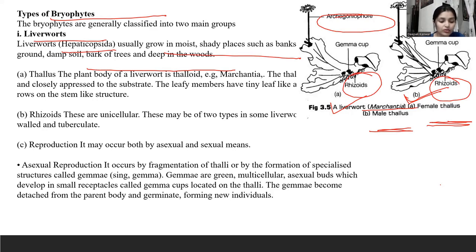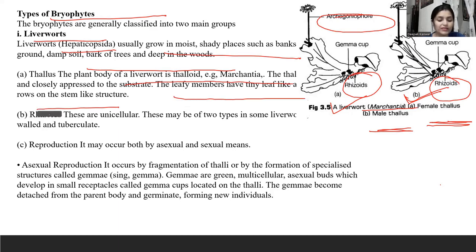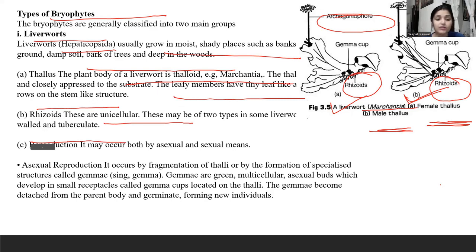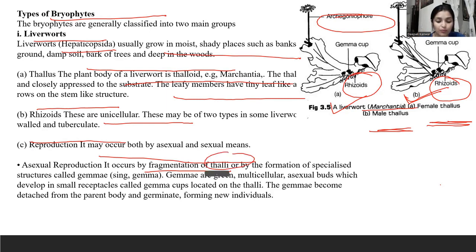If we start talking about the thallus, I have given the example here. There are leafy members that behave like stem-like structures. This whole part is called the thallus.